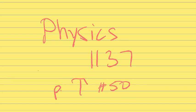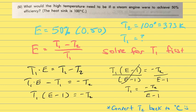This is a lesson for the Physics Pace 1137, problem number 50 on page T. The problem says, what would the high temperature need to be if a steam engine were to achieve 50% efficiency and the heat sink is 100 degrees Celsius?